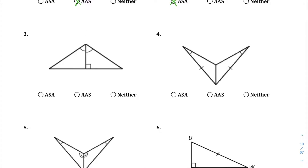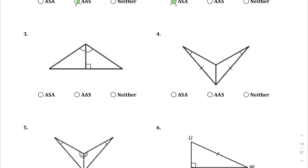Looking at question number three, this one can be a little tricky, because a lot of students might assume that the base of this triangle is a straight line. However, we can't assume that because there's only a right angle marker on one side. It's entirely possible this is not 90 degrees. We cannot assume that angle is 90 degrees. If it was 90 degrees we could say angle-side-angle because it's sharing that side, but we're just not sure about this angle — there's no way to verify it. So as much as I'd like to put angle-side-angle, I'm going to have to go with neither.